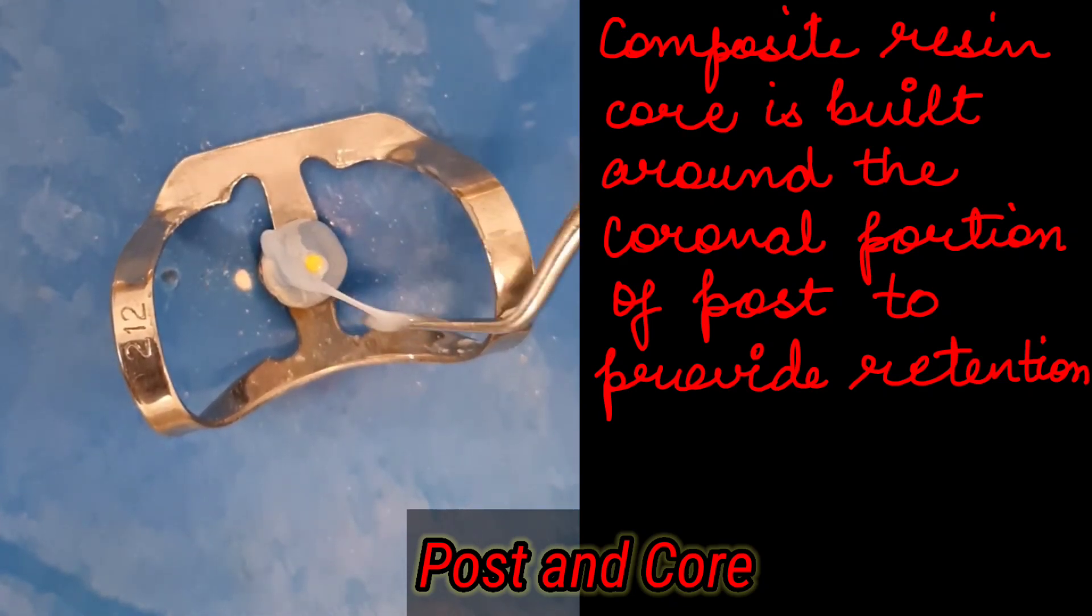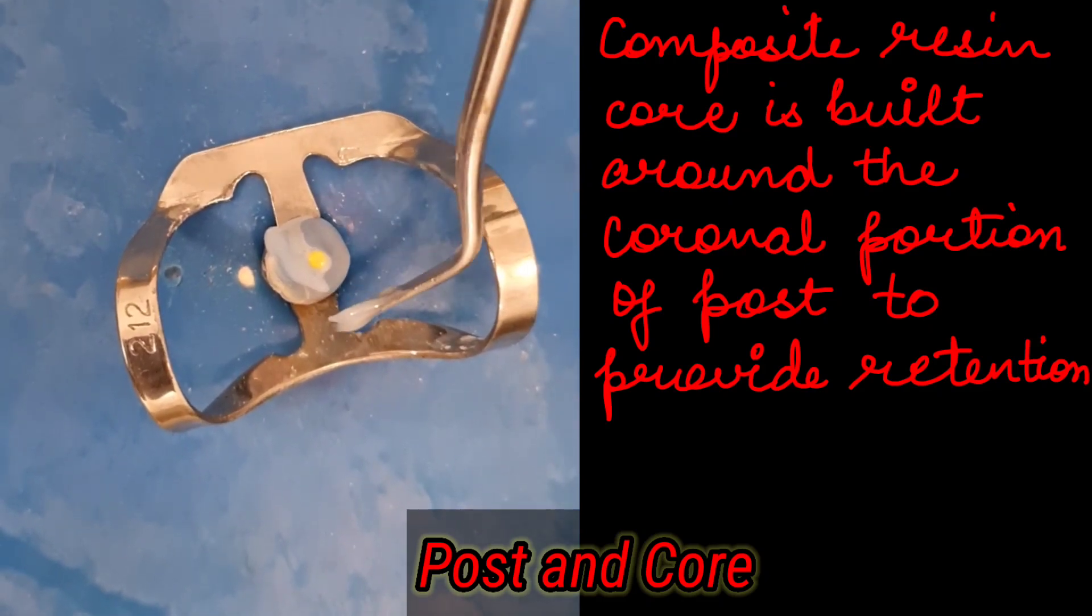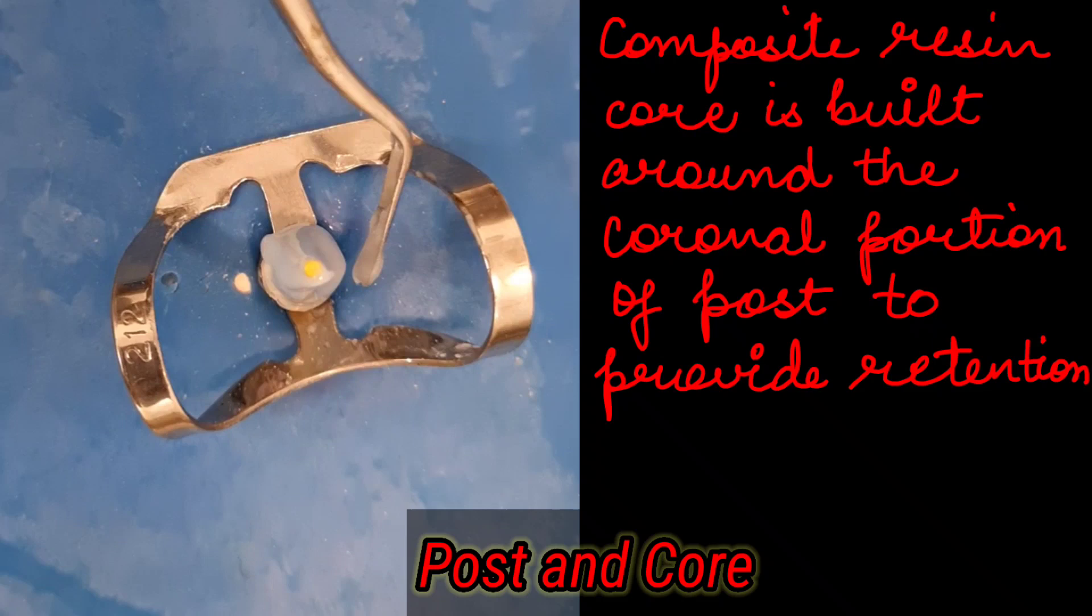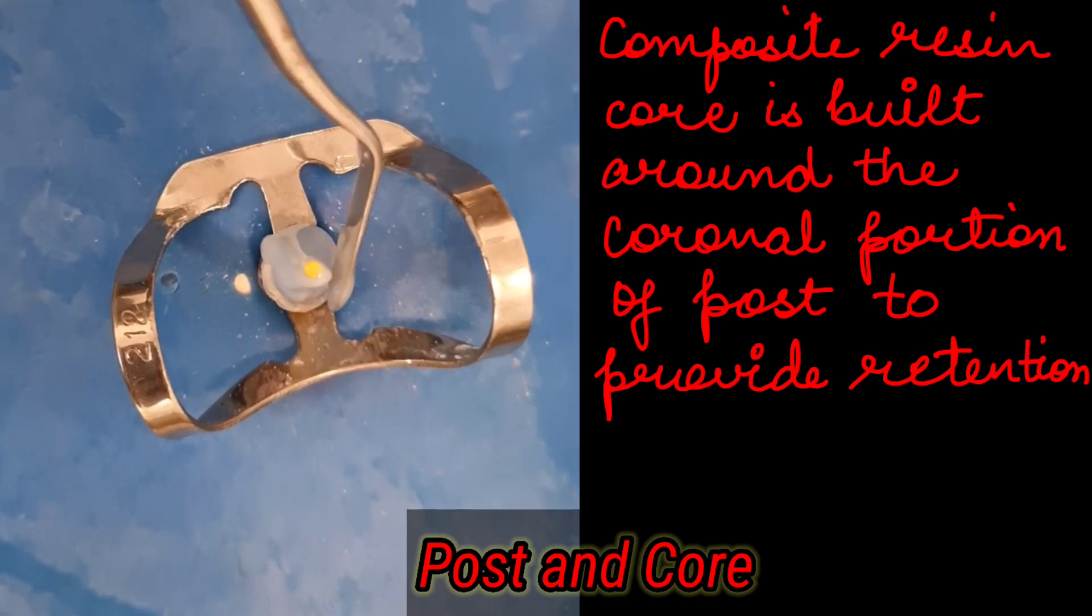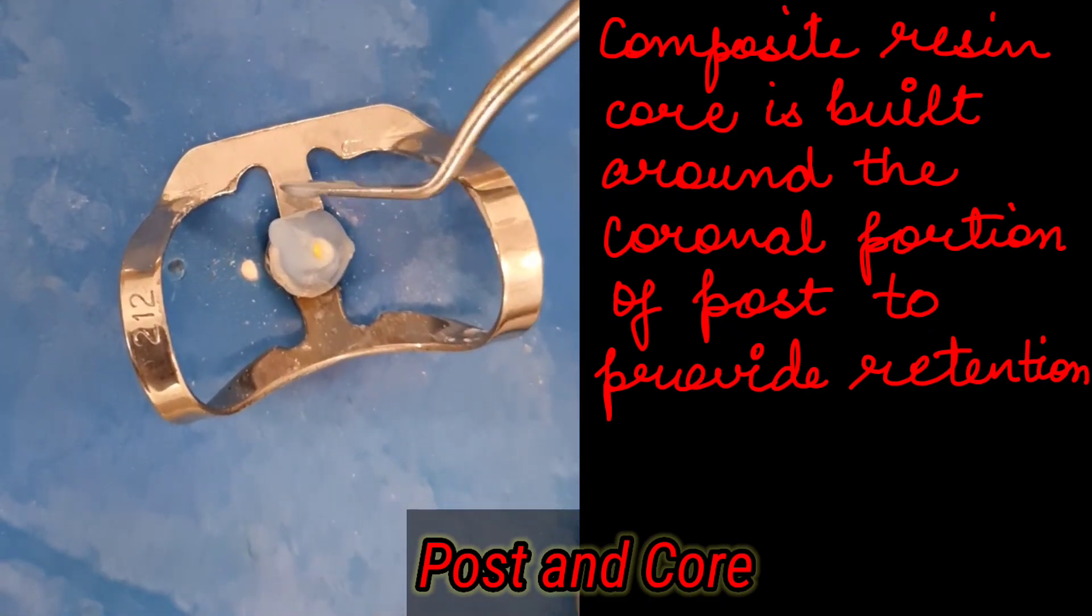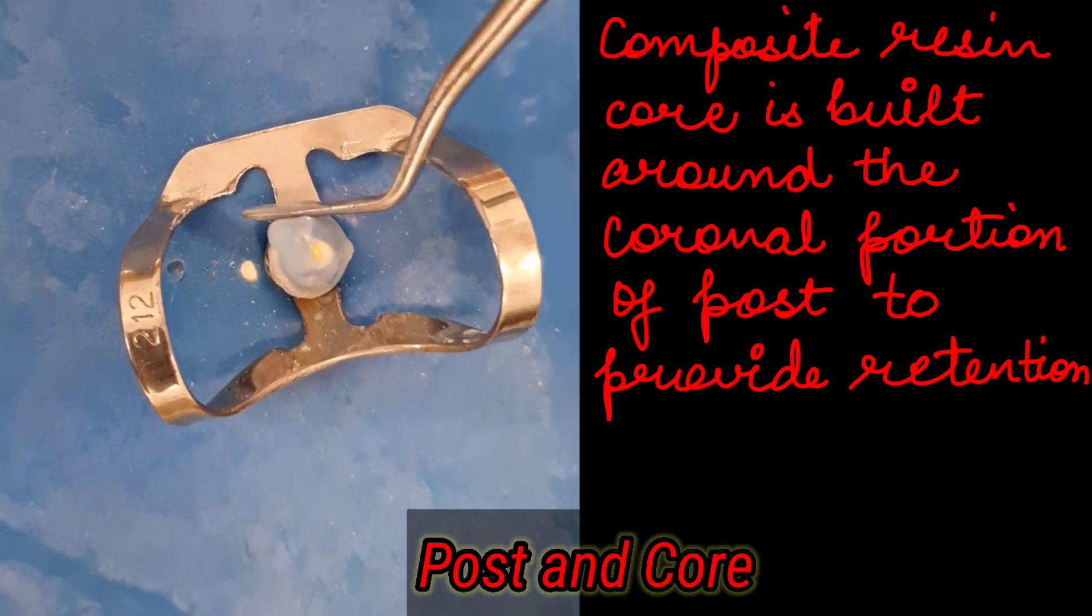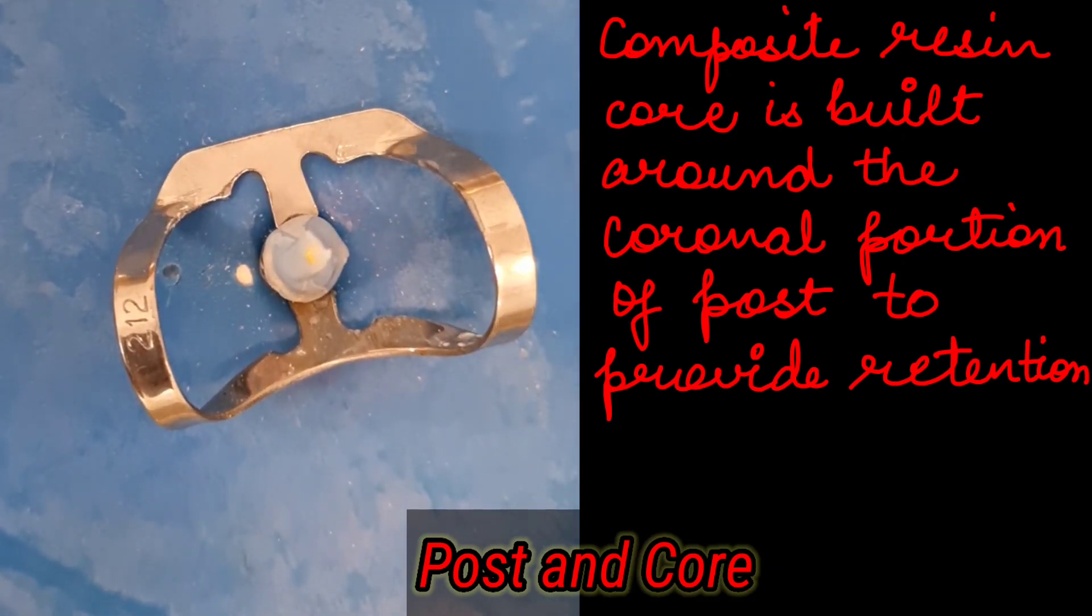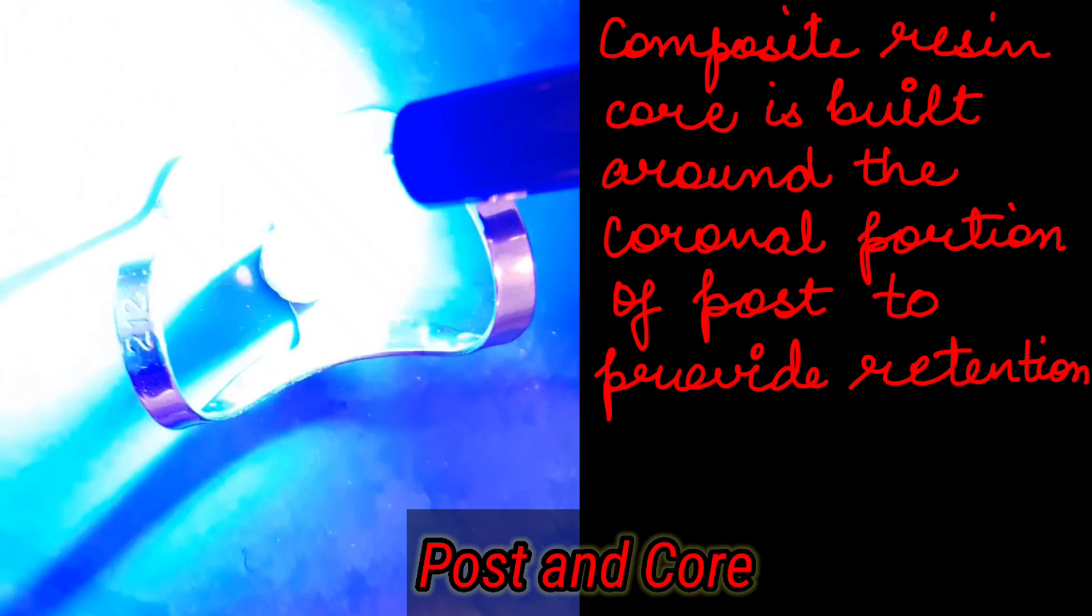Cementing a post is very easy and simple step. You take the cement, you smear it on all sides of the post and coat the walls of the post space. As you remember, we used the post itself to coat all sides of the post space inside the tooth with the cement tube.